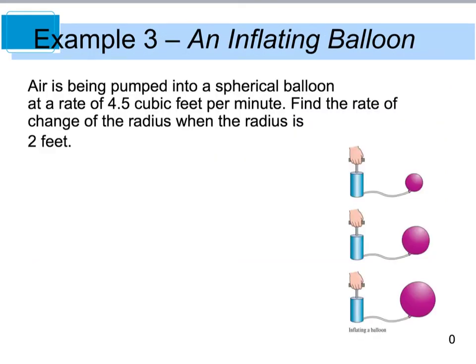Example 3 says that air is being pumped into a spherical balloon at a rate of 4.5 cubic feet per minute. We want to find the rate of change of the radius when the radius is 2 feet.